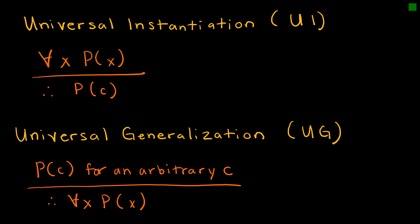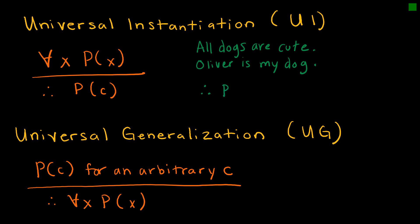Universal instantiation says if we have a statement that says for all of a domain some fact is true — such as all dogs are cute, so for all dogs they are cute — and then I tell you Oliver is a dog, this rule essentially allows me to get rid of the quantifier 'for all' and instead talk specifically about one element in the domain. Oliver is an element in the domain, and therefore I can say P(O), which essentially means Oliver is cute.